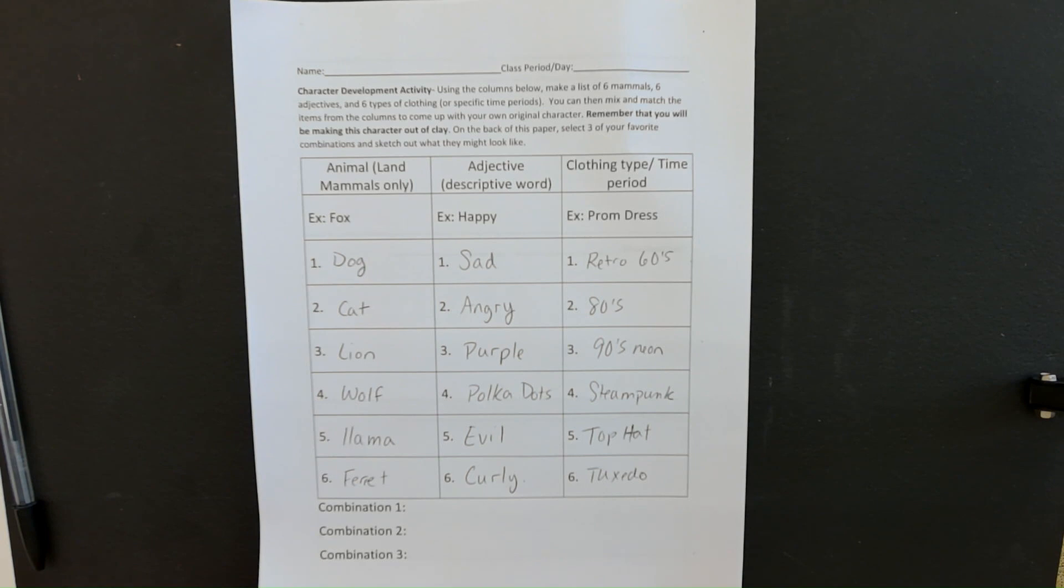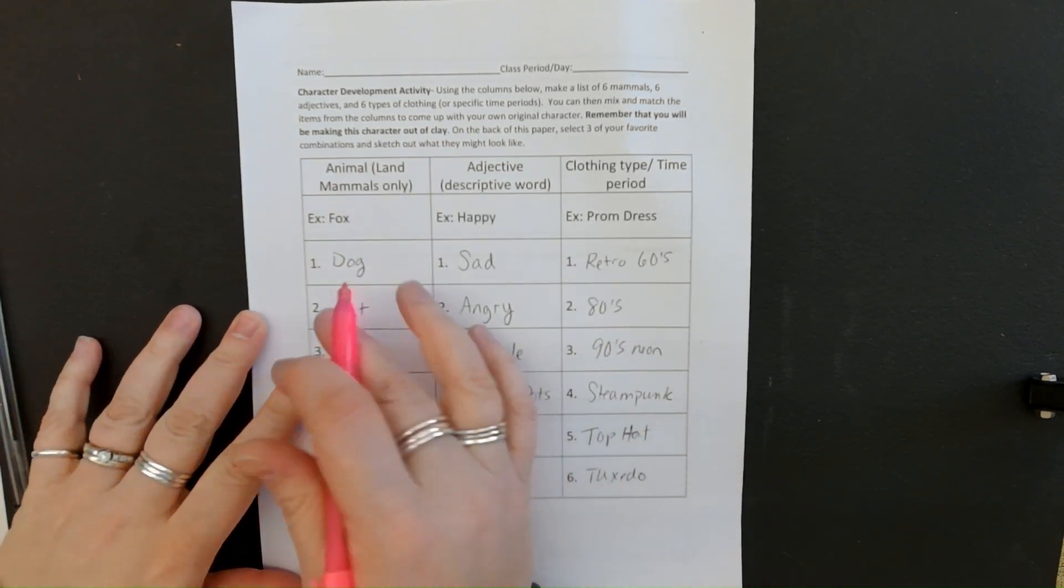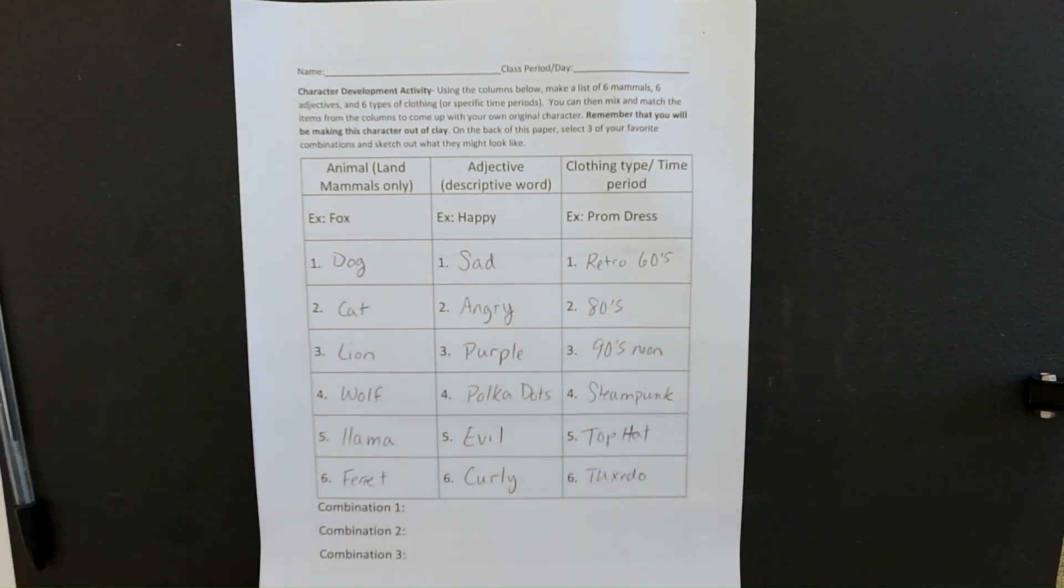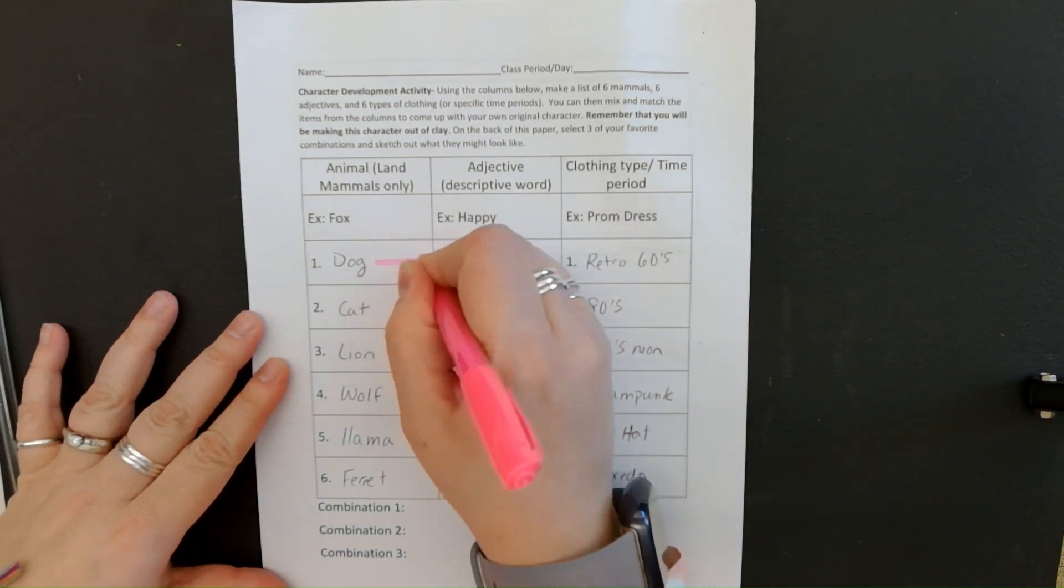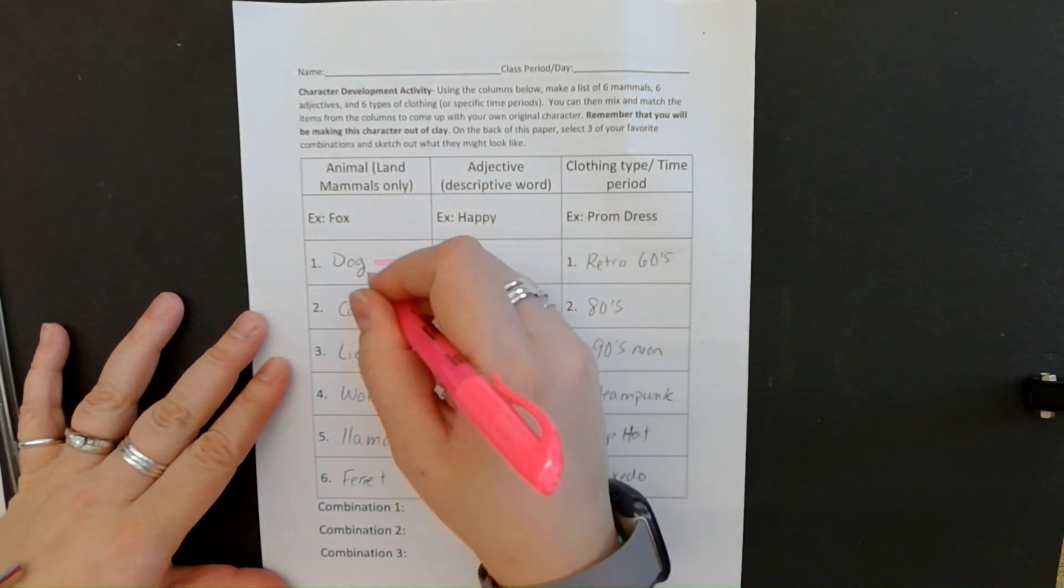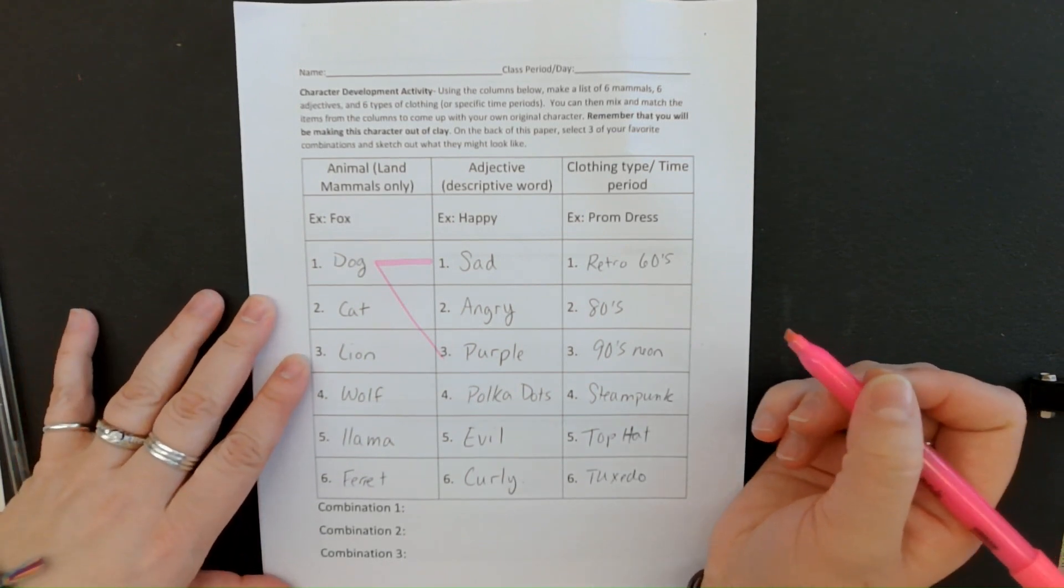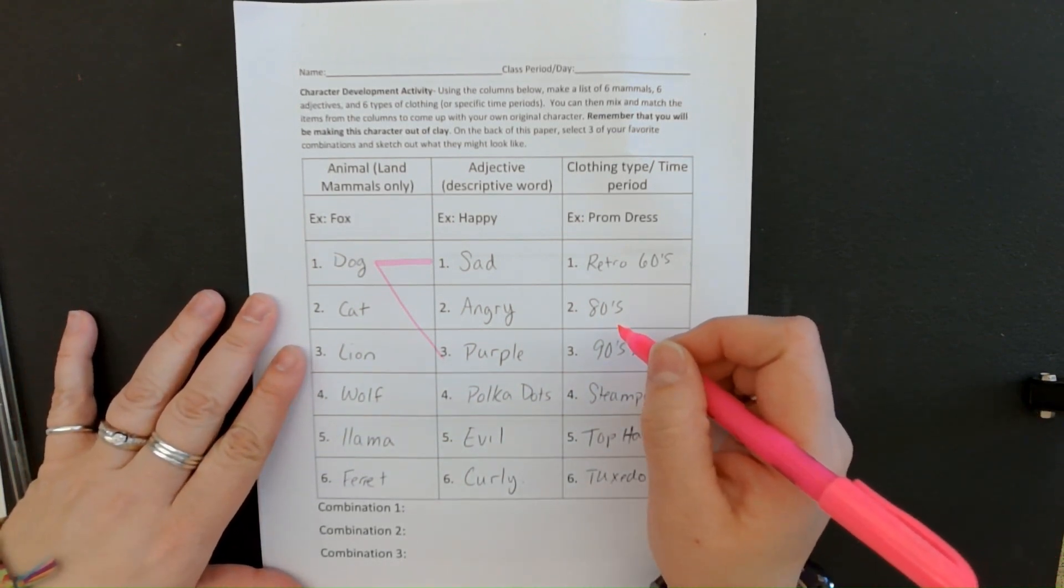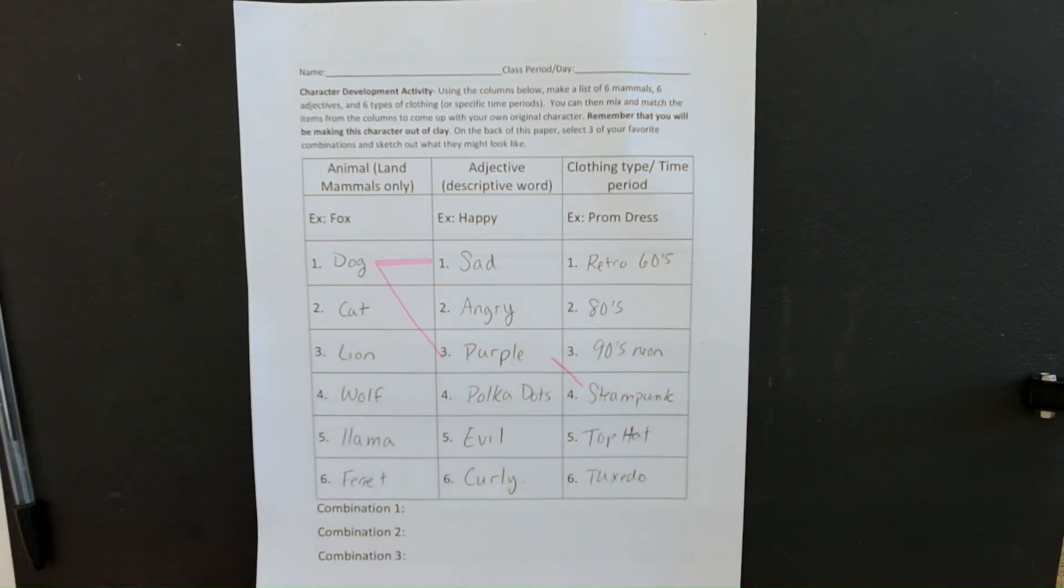So now what we're going to do is we're going to combine these items and these animals with the adjectives and the clothing to try and come up with our original characters. So if I'm going to look at my dog, maybe my dog is sad and maybe he's purple. So I pick more than one adjective and then maybe my dog is also wearing steampunk.